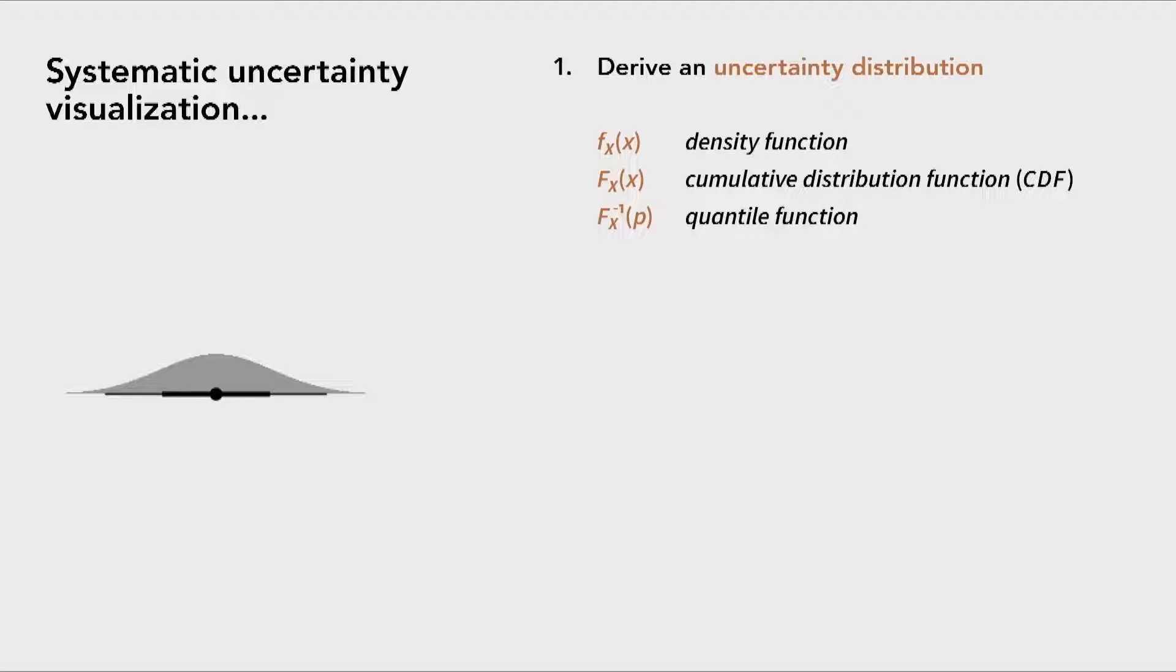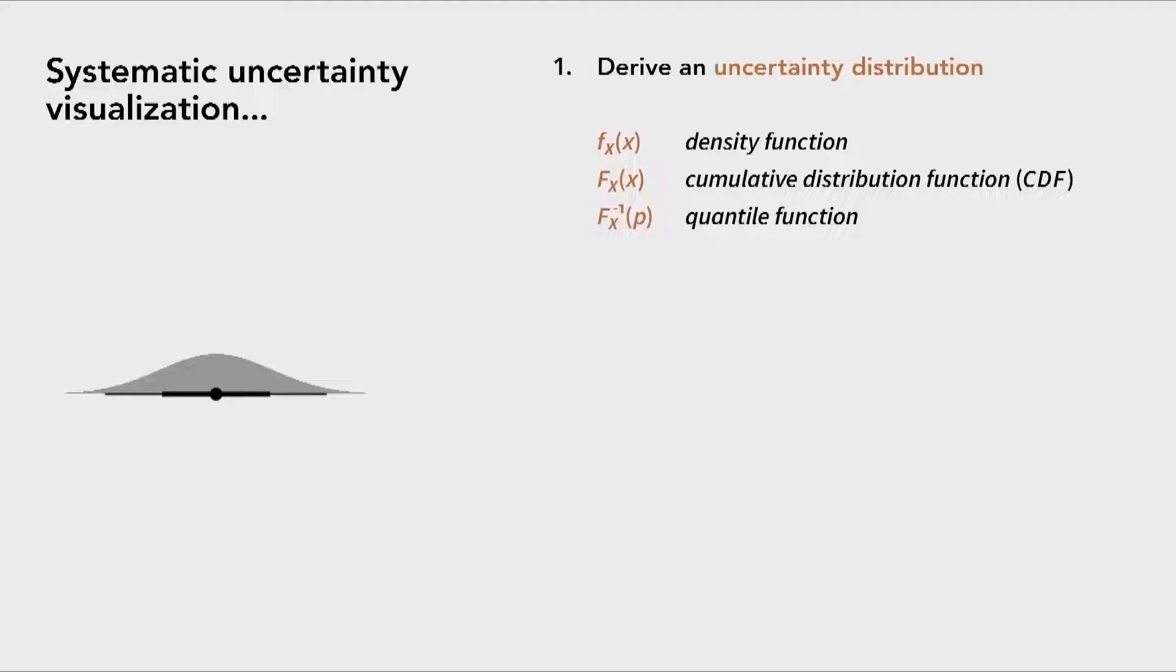The point is you derive an uncertainty distribution that you can represent in some way that ggdist understands, which might be a bunch of samples. It might be a distributional vector. It could be a number of different things. I'm not going to get into the details of that. But if you've derived the uncertainty distribution, what you can then do is map distributional properties onto visual channels, which is what ggplot kind of calls aesthetics.